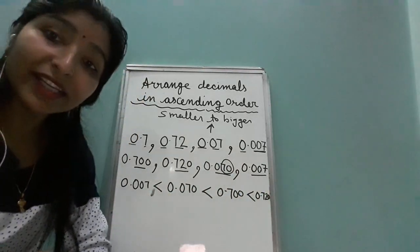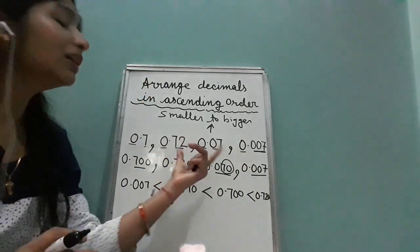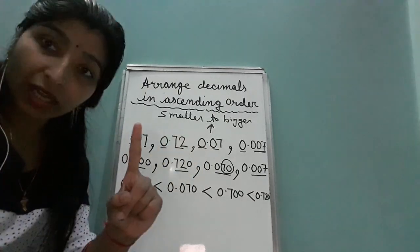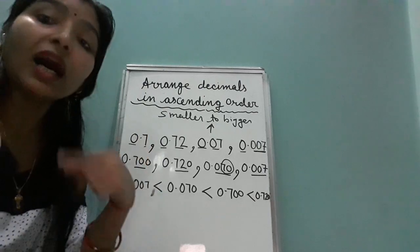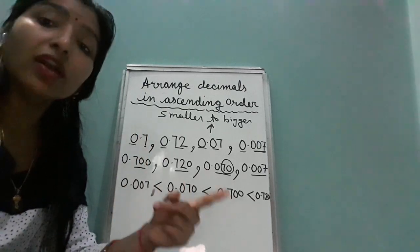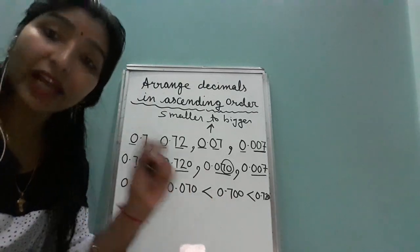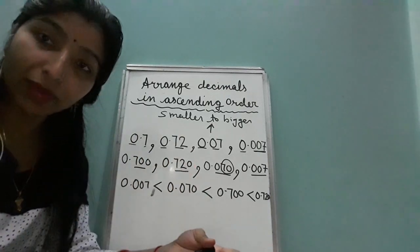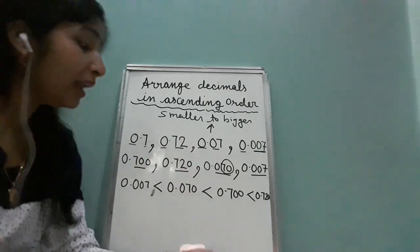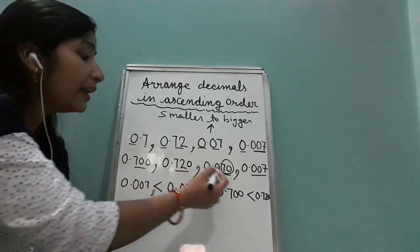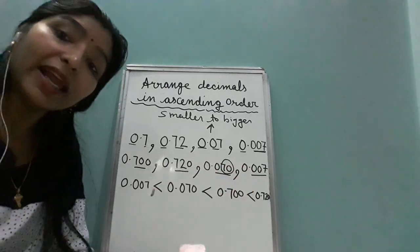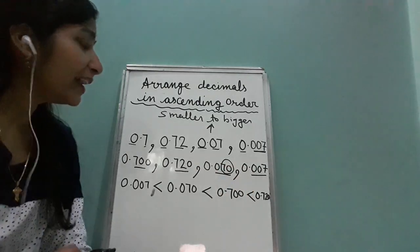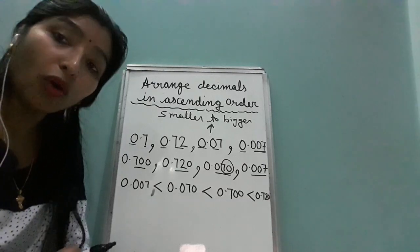So while arranging decimal numbers into ascending order: first compare the whole part; then check whether they are like decimals or not — if not, make them like decimals; and then compare the decimal part. These are the three steps to follow.